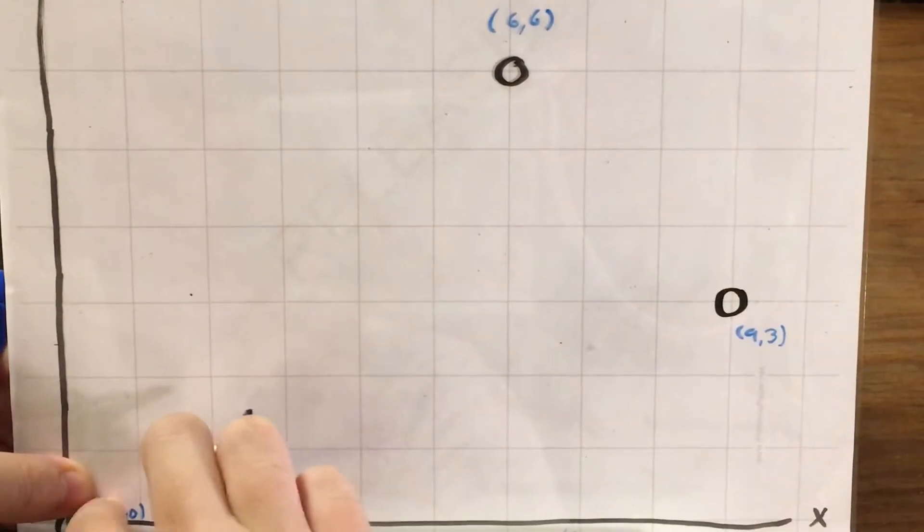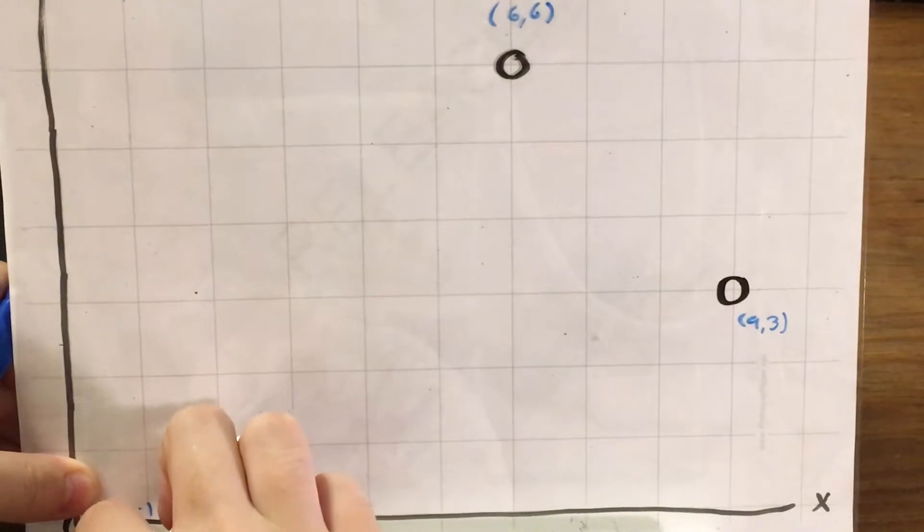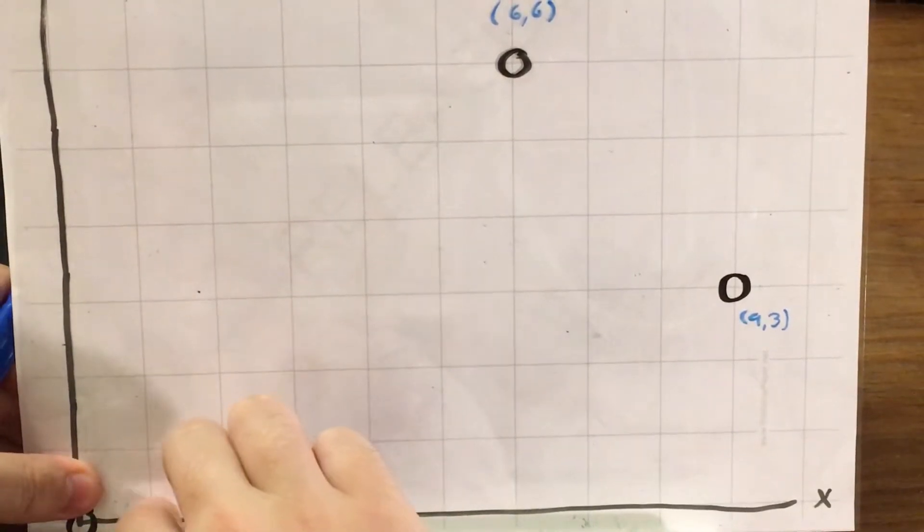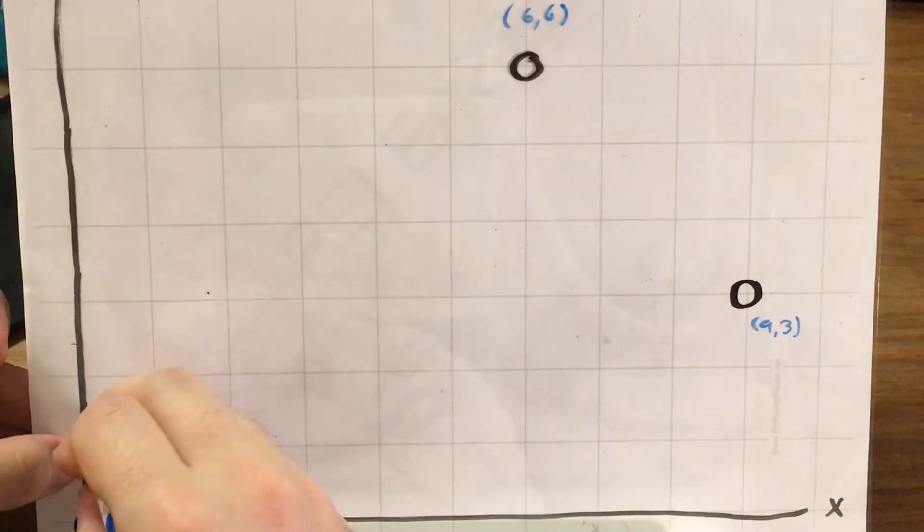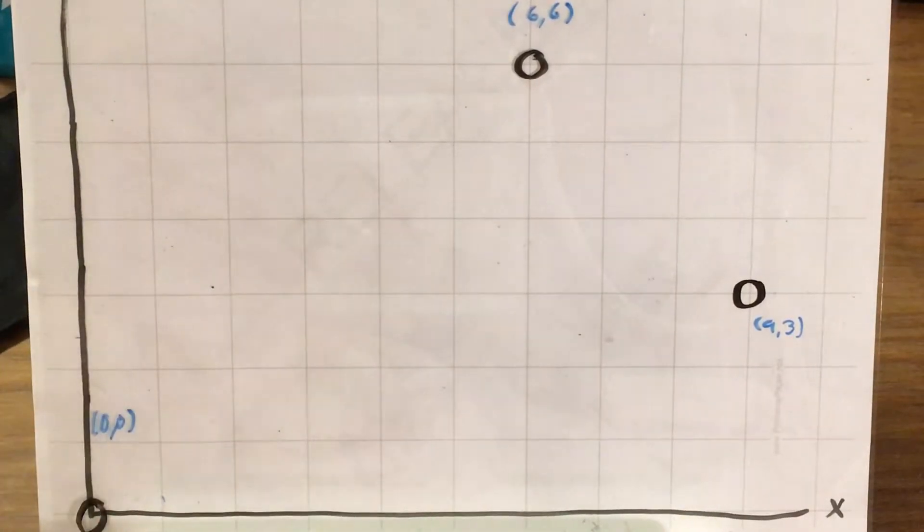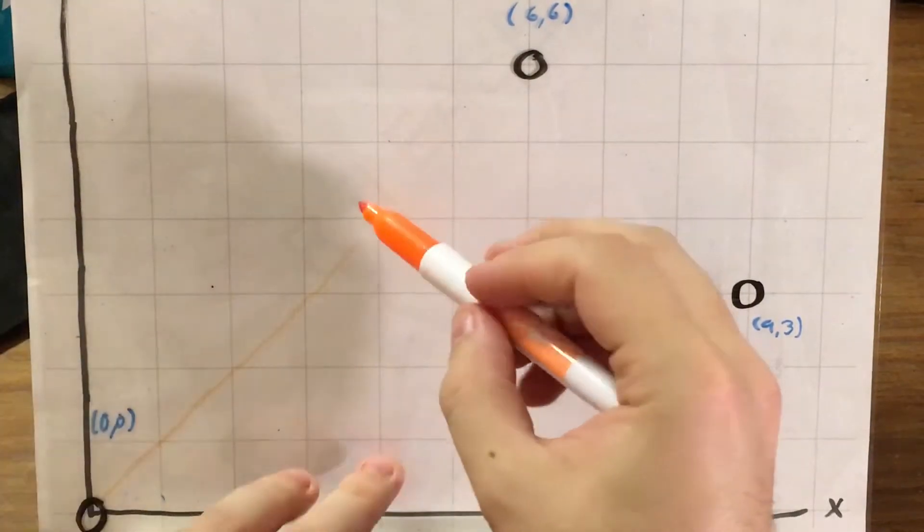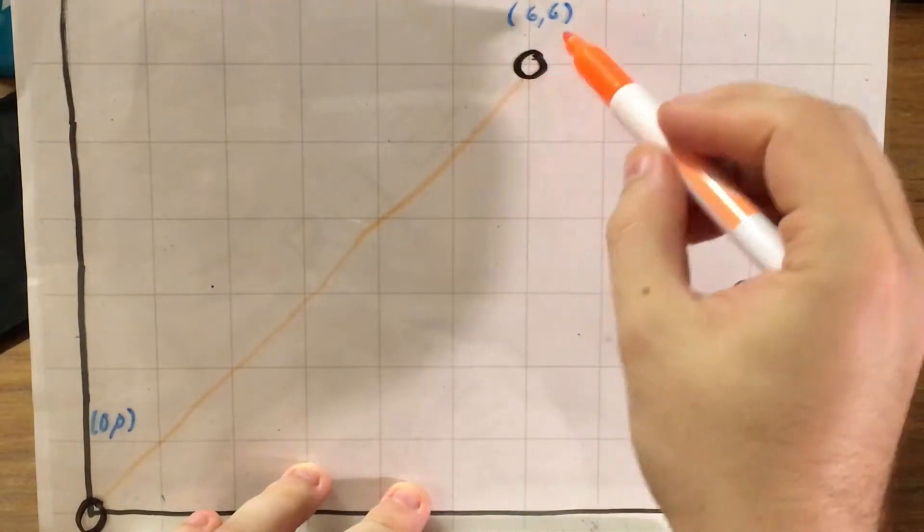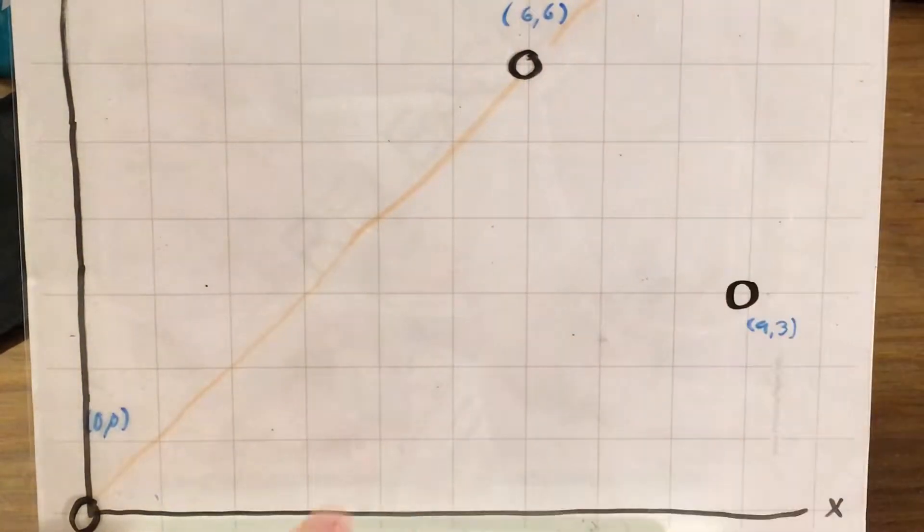That won't be too good if I have that there, so let me put that up here. (0,0), okay. Next, I need my line y equals x, and that is going to take me just up here, keeping in step with these diagonals.